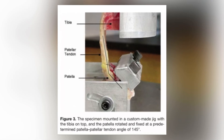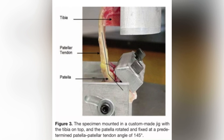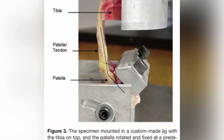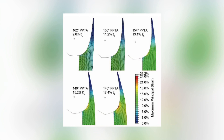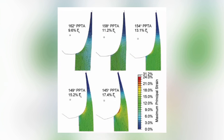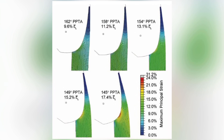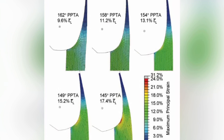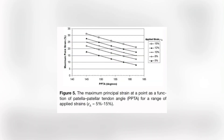They used something like this — they put different strains at different angles on the patellar tendon to see where we can see the most strain on that one spot. They found that 145 degrees, all the way at the bottom, showed the most strain on that one spot of the patellar tendon.